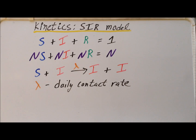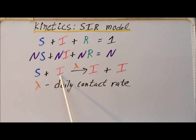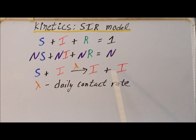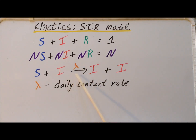We can represent the infection process in the form of a chemical reaction by having the susceptible fraction interact with the infected fraction. In the process, we end up with two infected individuals — one of which was initially infected and the second one which was previously just susceptible. This occurs with some particular rate constant lambda, which is called the daily contact rate — the average number of daily interactions per infected person that yields a new infection.